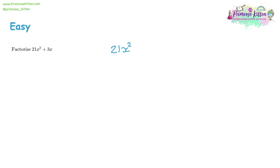Factorizing is the same thing but working backwards — expanding uses multiplication, factorization uses division. For 21x² plus 3x, we look at the numbers: what's the highest common factor of 21 and 3? The largest number you can divide both by is 3. Then look at the letters: we've got x² and x, and you can divide both by x.